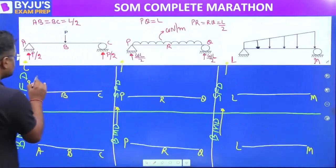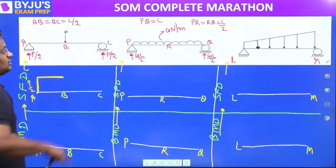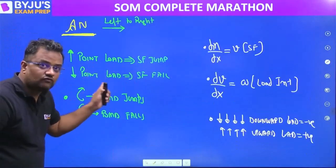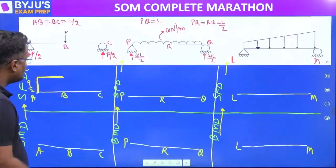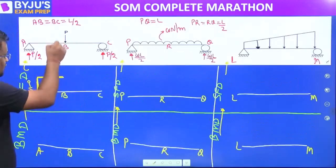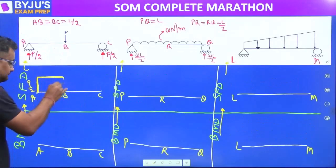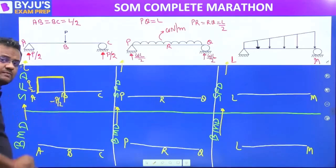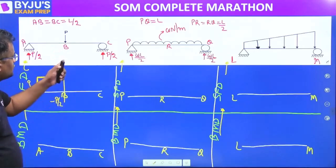It is constant. Then at point B there is a downward point load P. Downward load — shear force falls. Shear force falls: it is already at P/2, and falling by P it will reach minus P/2. Downward load, shear force falls.